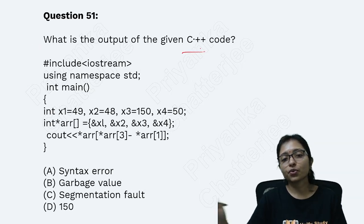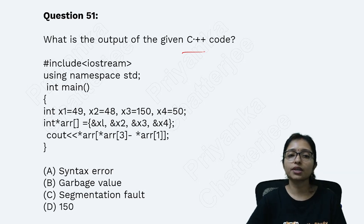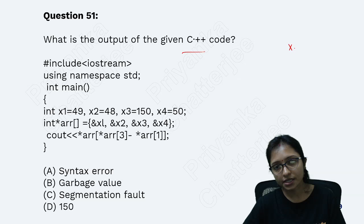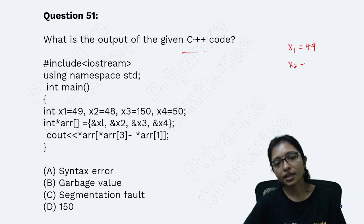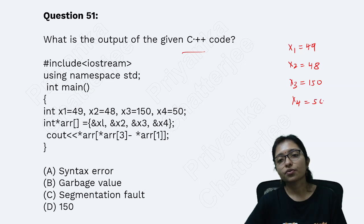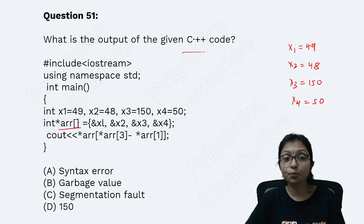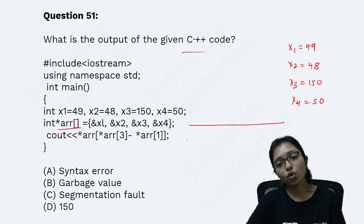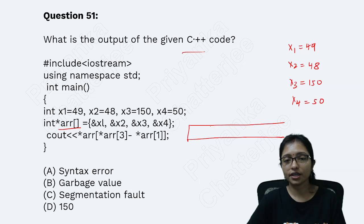So here you can see what is the output for this C++ programming. This is how it is working. Here there are four variables: X1 is 49, X2 stores 48, X3 is 150, X4 is 50. Now it is a pointer type array, meaning this array will hold the address of another variable.